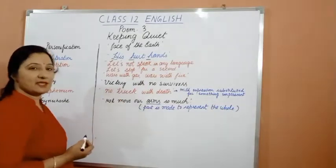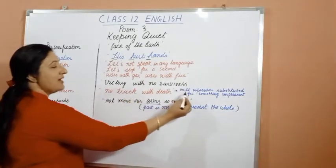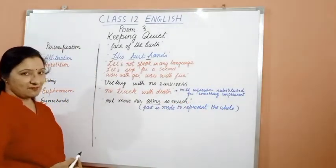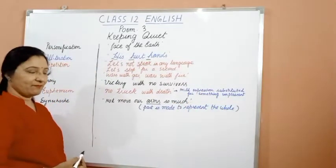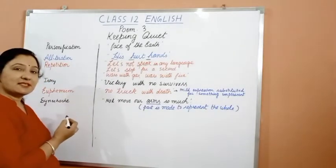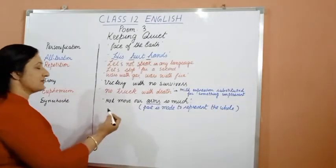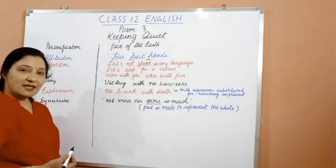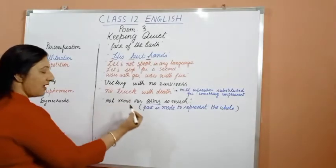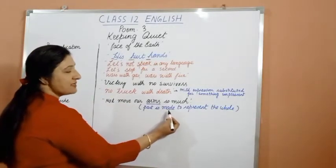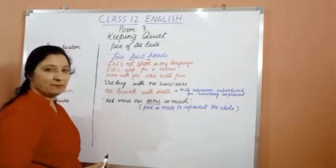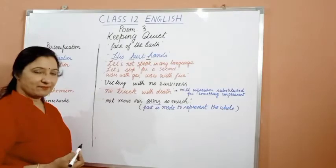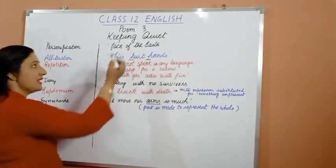He uses euphemism in the expression 'no truck with death'. Euphemism is a figure of speech in which mild expressions are substituted for something unpleasant or embarrassing. Then he uses synecdoche in 'not move our arms so much'. Synecdoche is a figure of speech in which a part is made to represent the whole — here 'arms' represents ourselves.